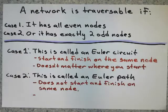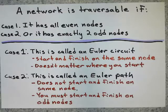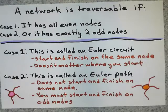And in case two, where it has two odd nodes, this is called an Euler path. And you don't start and finish on the same node, but you must start and finish on the two odd nodes that are in that network.